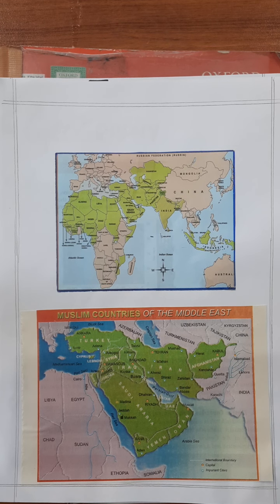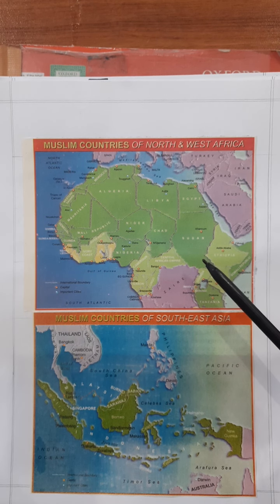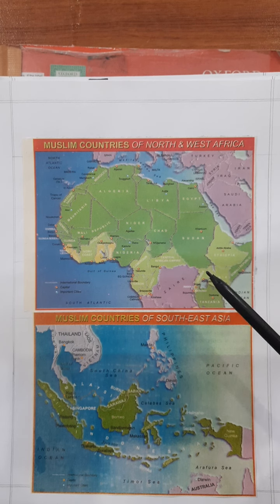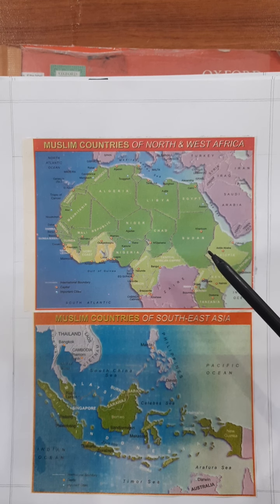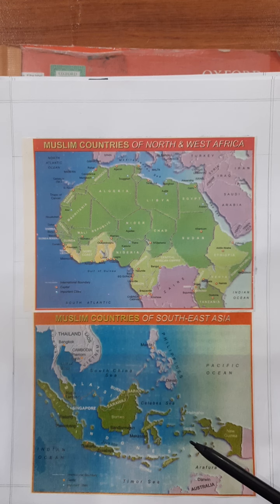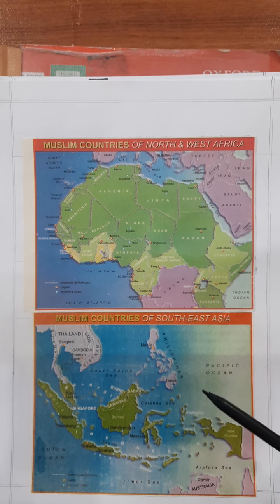Then in another picture you can see the Muslim countries of the continent of Africa: Egypt, Libya, Algeria, Morocco, Sudan, etc. So these are the Muslim countries of Africa. Then in this picture you can see the Islamic countries of Southeast Asia. As I have already told you, most of the Muslim countries are located in Northern Africa, Southern Asia, and the Middle East.